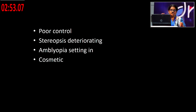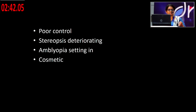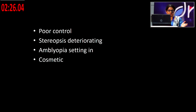Indications for surgery include poor control of strabismus, deteriorating stereopsis, onset of amblyopia, and large deviations for cosmetic reasons. This applies to children and adults alike, as adults can also present with large intermittent exotropia. Surgery is indicated when the sensory status is worsening and conservative management is insufficient.